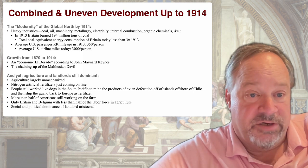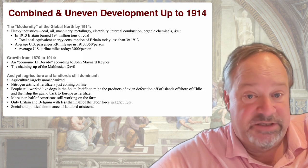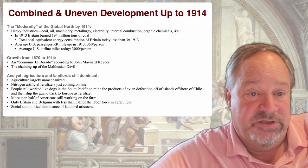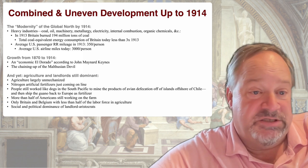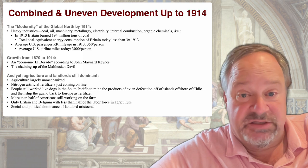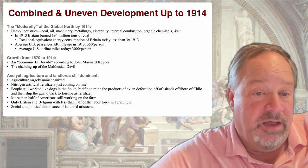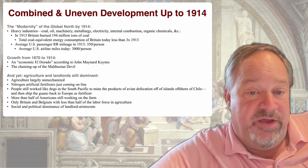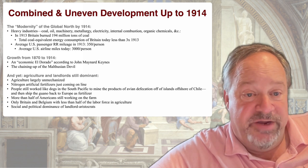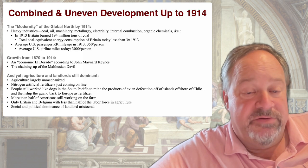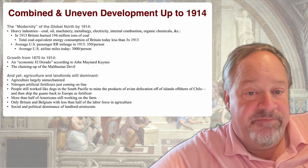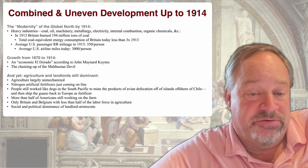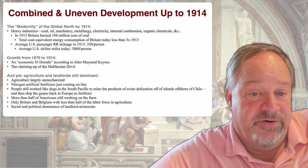The heavy industries were there: coal, oil, machinery, metallurgy, electricity, internal combustion, organic chemicals. In 1913, Britain burned 194 million tons of coal, and the total coal equivalent energy consumption of Britain today is less than three times its 1913 level. In 1913, the average American traveled 350 miles by rail — not the same order of magnitude, but not that many orders of magnitude behind the 3,000 miles per person that U.S. citizens traveled via airplanes before the coronavirus plague arrived.